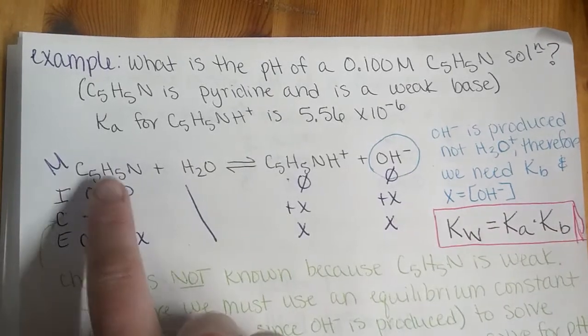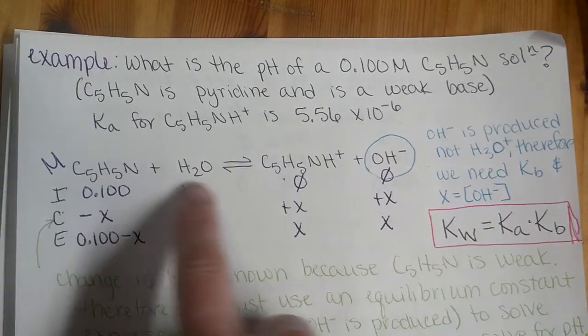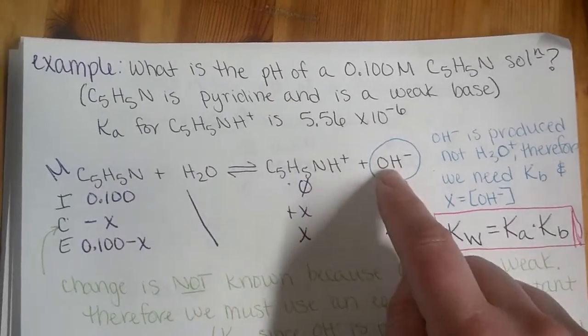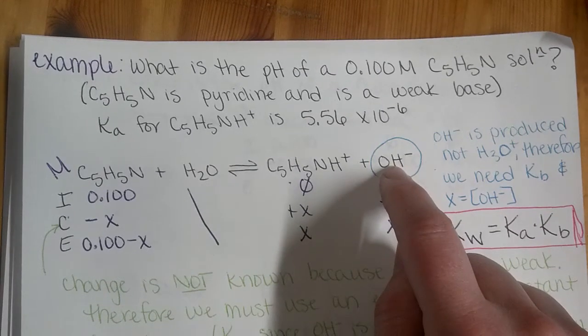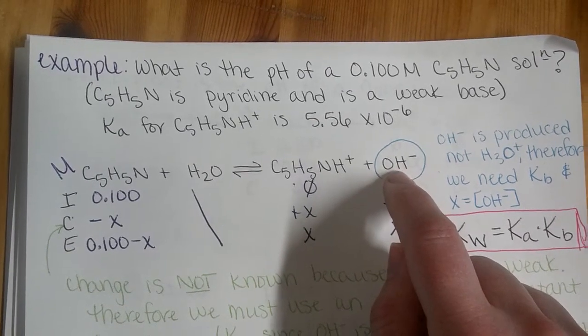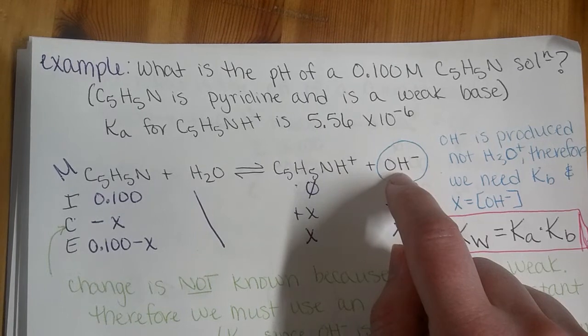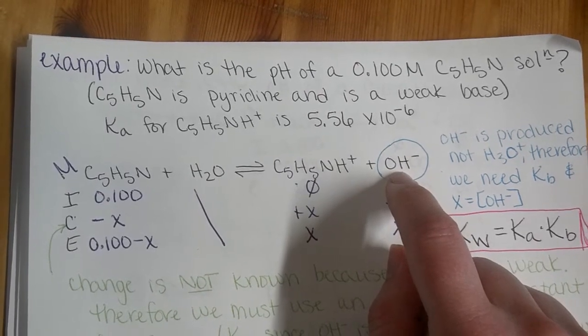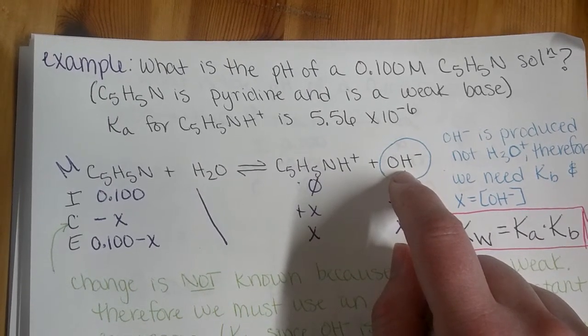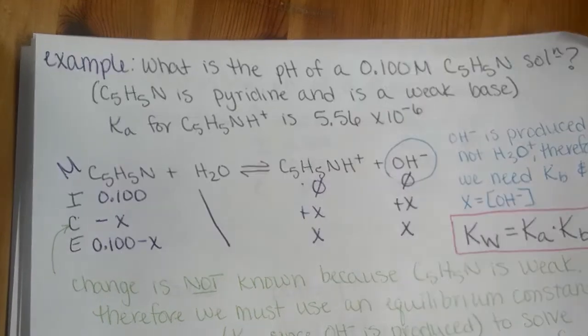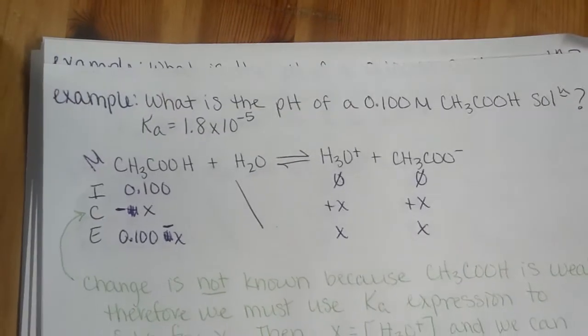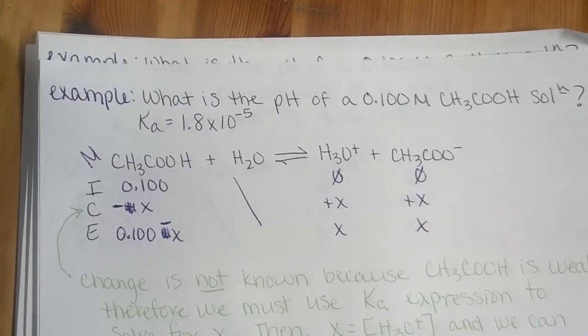When we set up our ICE table, it becomes clear that we need Kb because we're producing the hydroxide ion and not H3O+. That's a critical change from the previous example where we worked with our weak acid.